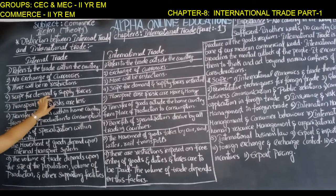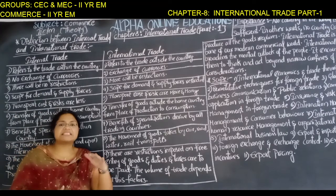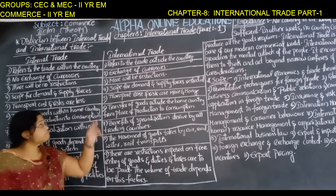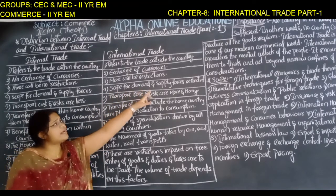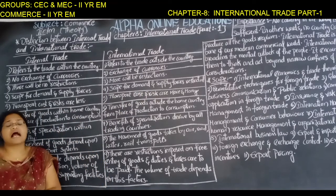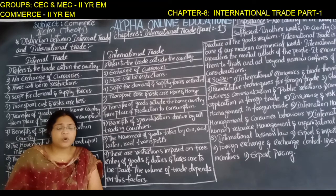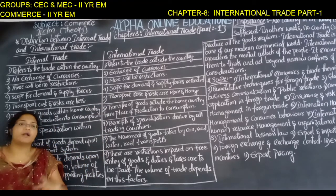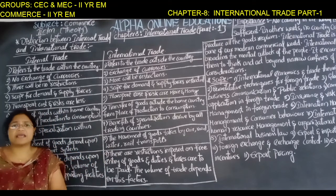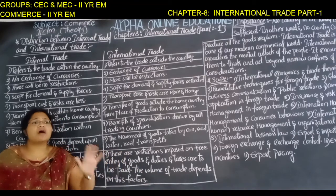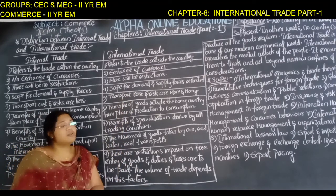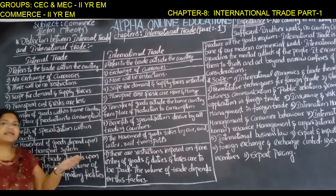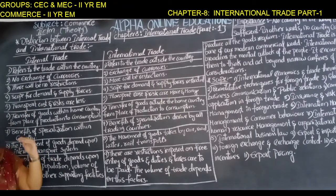In internal trade, there is scope for demand and supply forces — products are prepared according to customer demand and supplied accordingly. In international trade, however, scope for demand and supply forces is restricted. We cannot demand or force a country to supply; they will only supply if they have sufficient product available.